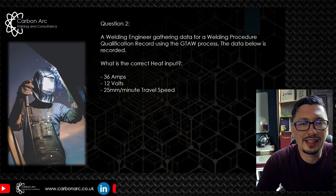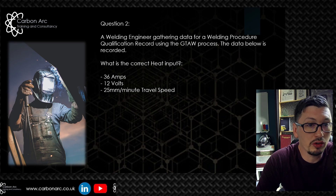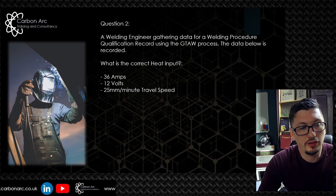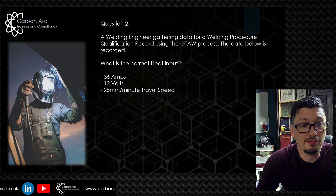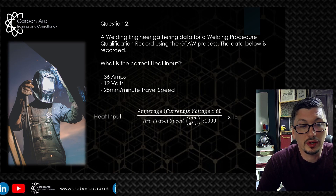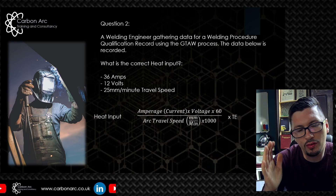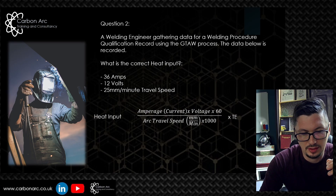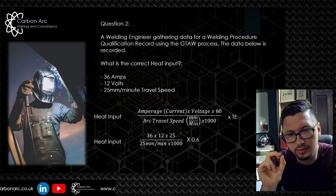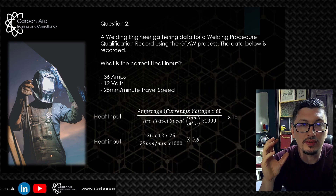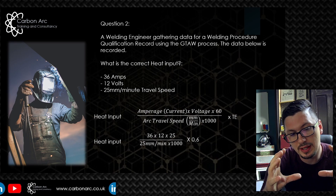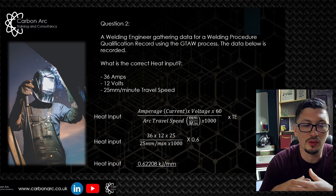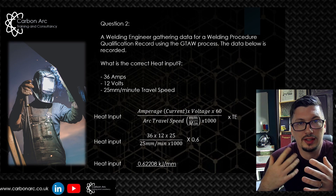Question two: a welding engineer is gathering data for a welding procedure qualification record using a GTAW process. Data recorded: 36 amps, 12 volts, and a travel speed of 25 millimeters per minute. The heat input calculation starts exactly the same as arc energy, but now we include the thermal efficiency factor. From the chart, GTAW has a thermal efficiency of 0.6. Taking the arc energy result and multiplying by 0.6 gives a heat input of 0.62 kJ/mm.